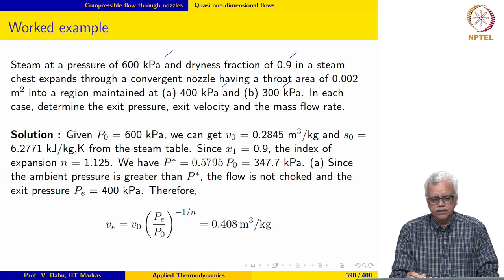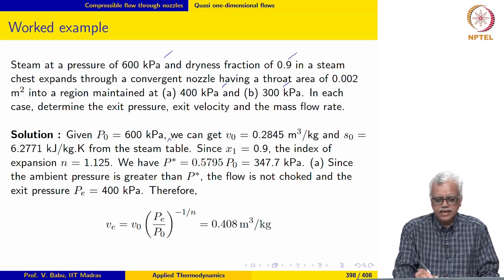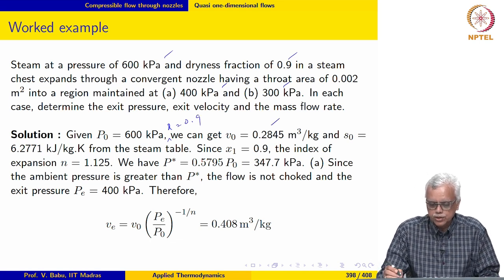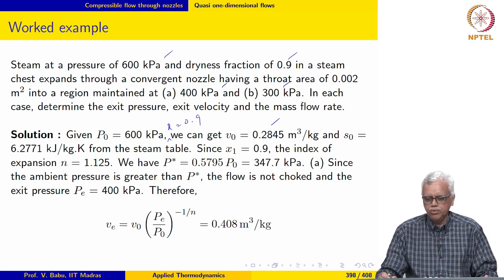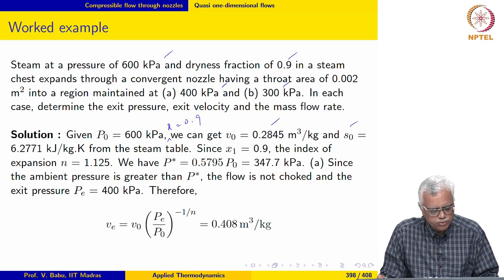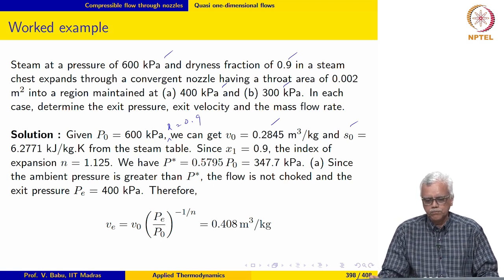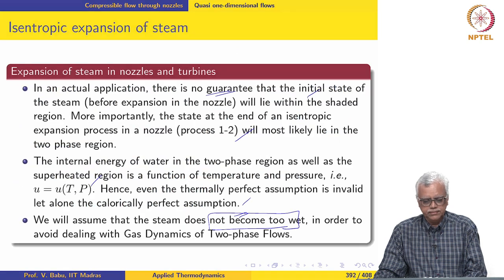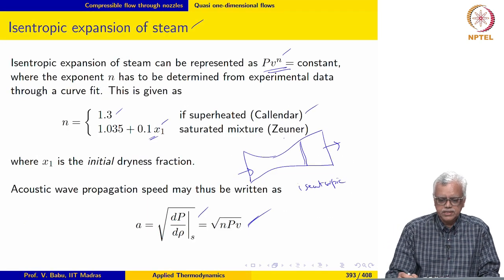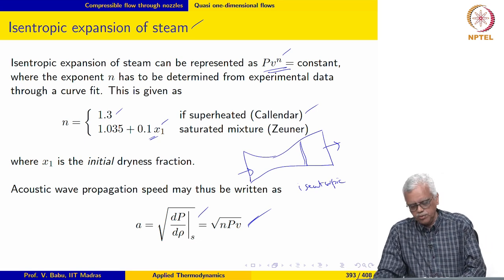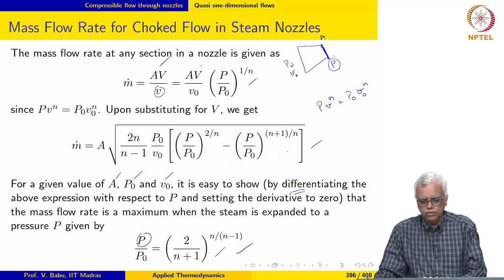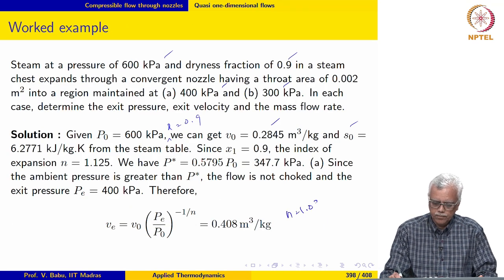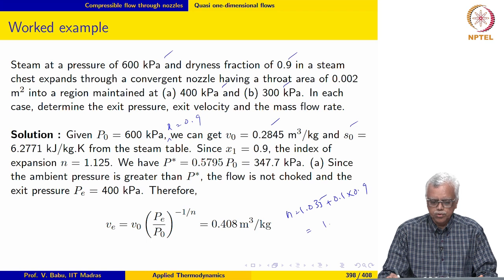With the given information of p₀ = 600 kPa and x = 0.9, we can get the specific volume of the stagnation state v₀ = 0.2845, s₀ = 6.2771 from the steam table. Since x₁ = 0.9, the index of expansion n = 1.035 + 0.1 × x₁ = 1.035 + 0.1 × 0.9, which comes out to be 1.125.